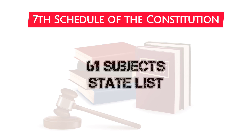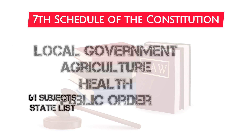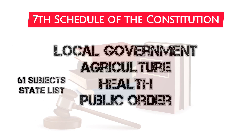On the other hand, 61 topics on the state list are exclusively under the control of the state governments. These topics include local government, agriculture, health, and public order.